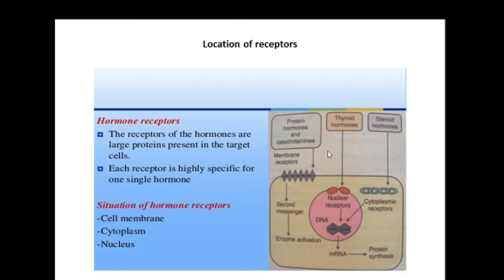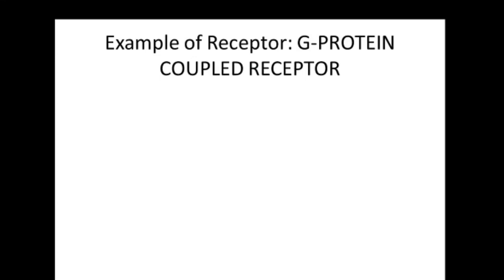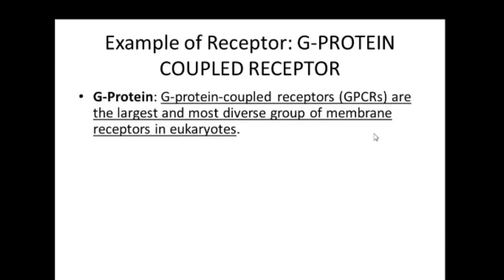Regarding the location of receptors: this diagram shows where receptors are located. Receptors are on the cell membrane especially for protein hormones and catecholamines — in other words, the water-soluble hormones have their receptors located in the cell membrane. For thyroid hormones, their receptors are called nuclear receptors because they are located on the nuclear membrane. Steroid hormone receptors are usually found in the cytoplasm. Lipid-soluble hormones can easily penetrate the phospholipid bilayer, but water-soluble hormones cannot. An example of a receptor is the G-protein coupled receptor, which is the largest and most diverse group of receptors in eukaryotes.